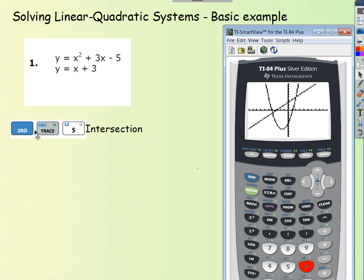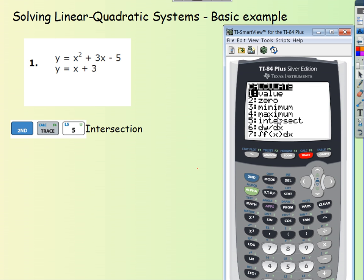You're going to hit second, trace. We're going to choose number 5 because number 5 is the intersection.